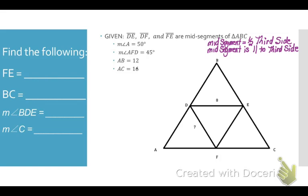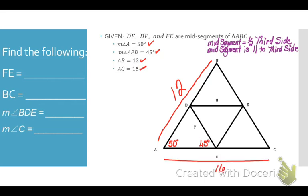Let's mark up our diagram with the given information. We know that angle A is 50 degrees, angle AFD is 45 degrees, the length of side AB is 12, and the length of side AC is 16.